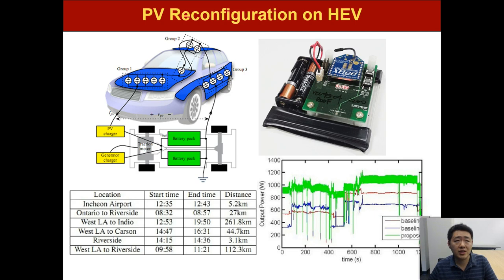Finally, we have proposed PV reconfiguration for electric vehicles. As shown in the left top figure, we propose to mount PV cells everywhere on the surface of the electric vehicle, like the top, the sides, and also the engine hood, and the rear, and so on.